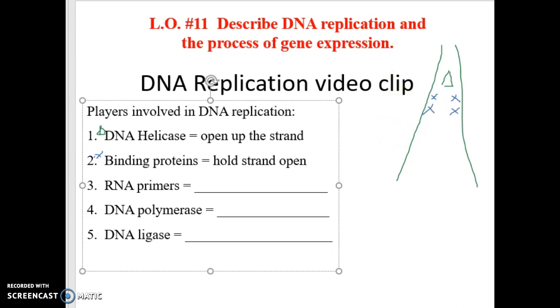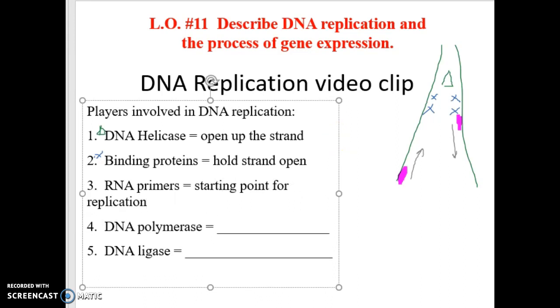Now DNA has to know, well, where do I start replicating? Well, that is what the RNA primers do. So there will be one here and one here. The RNA primers tell it, here's your starting point, and then replication is going to occur in that direction from this primer. Primer up here, replication occurs in that direction from that primer. So the primers, the RNA primers, are the starting point for replication. So they have to be put there to say, all right, this is where you start replicating.